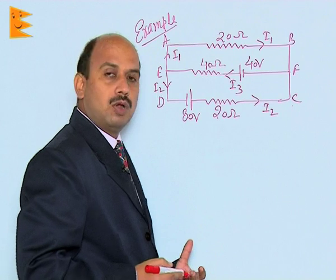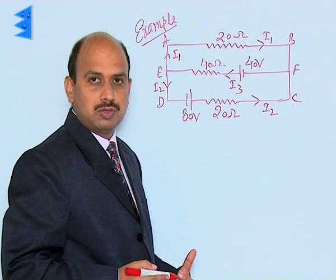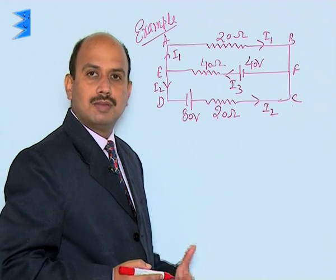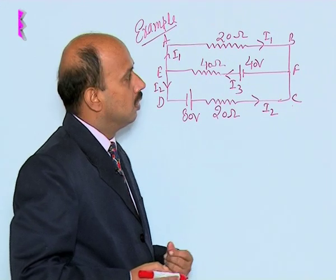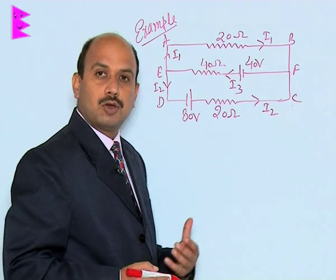If the direction of the current is not given, then you can assume the direction of current and take the distribution according to the junction rule, then apply the voltage rule or the loop rule. Here to calculate I1, I am going to use Kirchhoff's law.